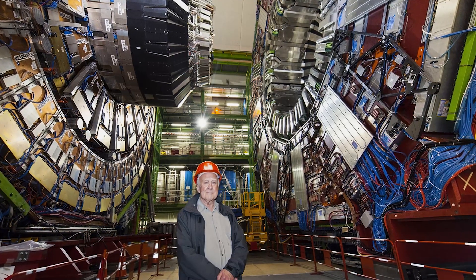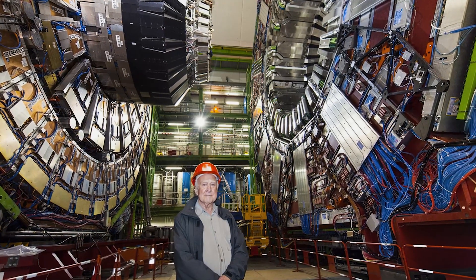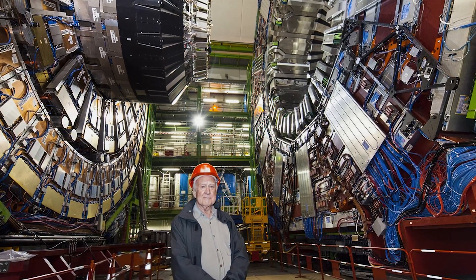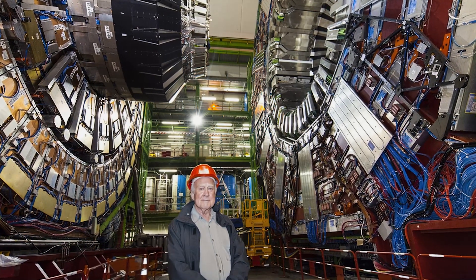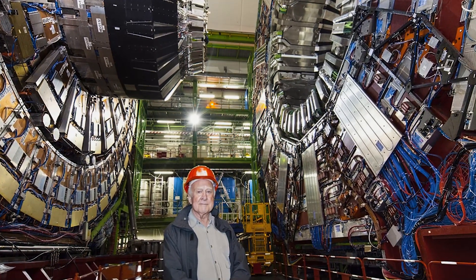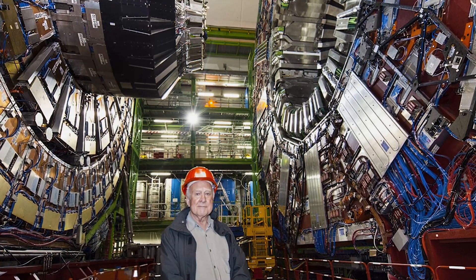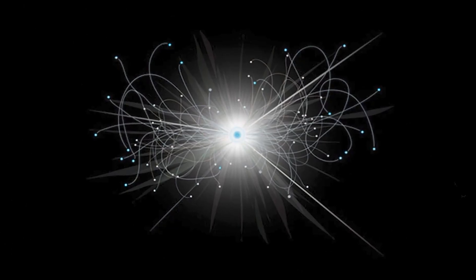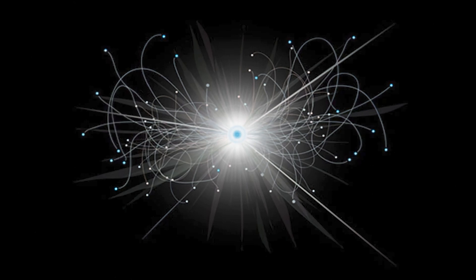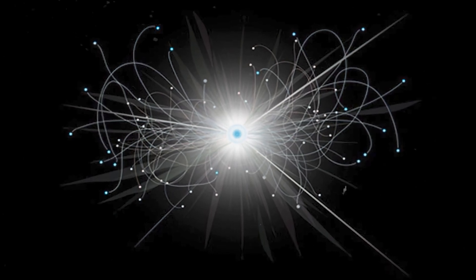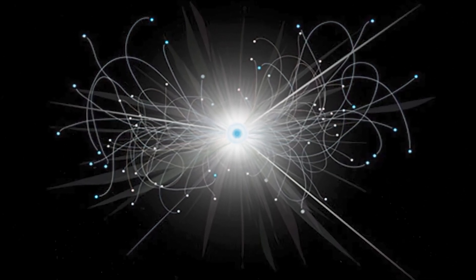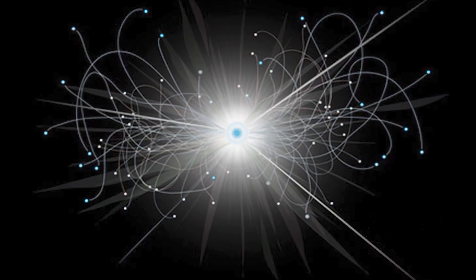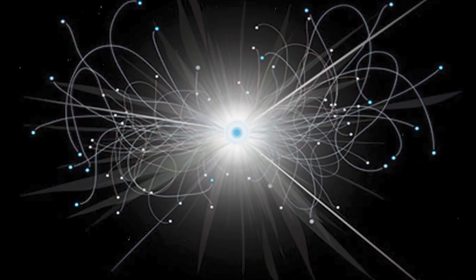This particle had no electrical charge, it was short-lived and it decayed in ways that the Higgs boson should, according to theory. To confirm if it really was the Higgs boson, physicists needed to check its spin. The Higgs boson is the only particle to have a spin of zero. By examining two and a half times more data, they concluded in March 2013 that, indeed, some kind of Higgs boson had been discovered.